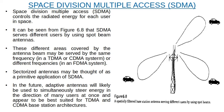Today we are going to discuss space division multiplexing, or SDMA. SDMA controls the radiated energy for each user in space. As seen in this figure, SDMA serves different users by using spot beam antennas. The different areas covered by the antenna beam may be served by the same frequency in a TDMA or CDMA system, or different frequencies in an FDMA system.